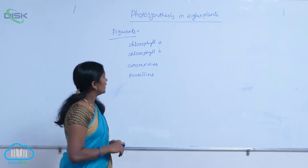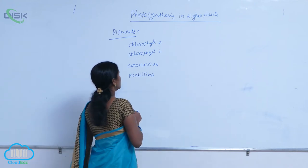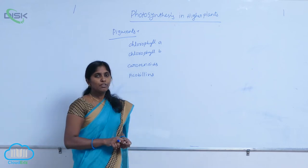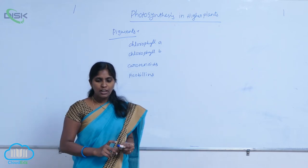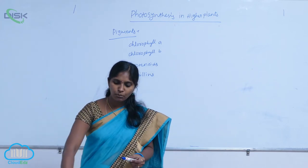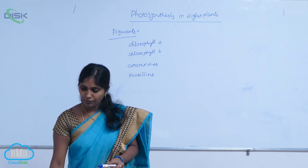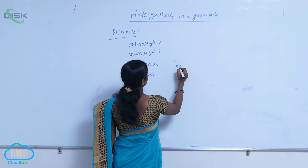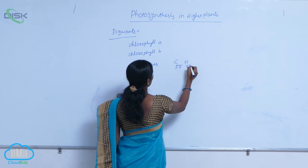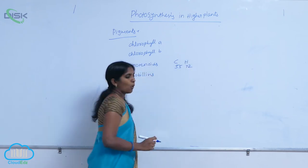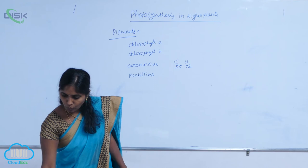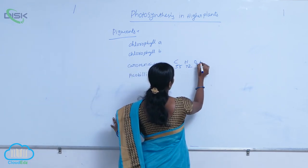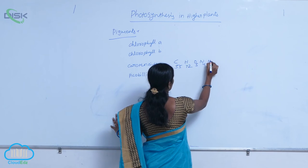Chlorophyll B has the empirical formula of C55, H72, O5, N4, Mg.